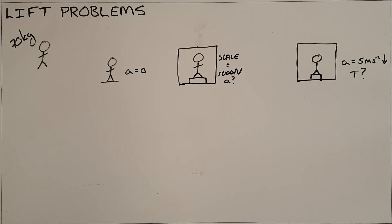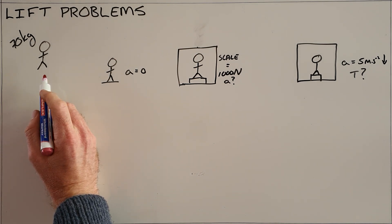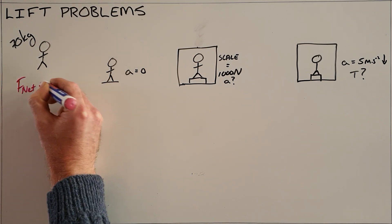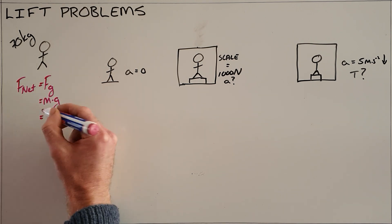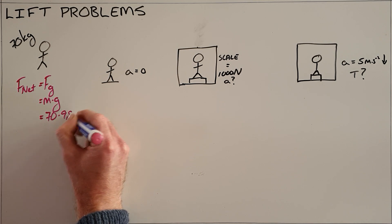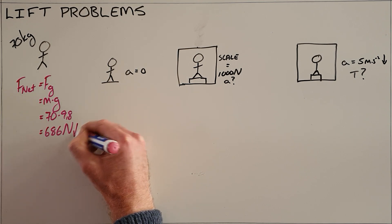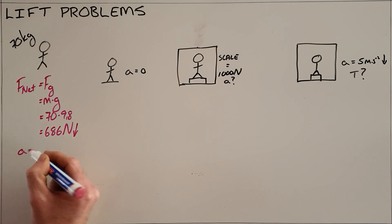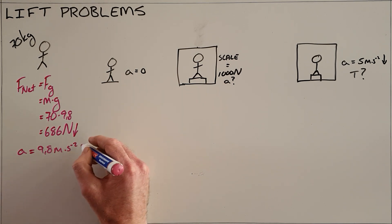Lift problems are commonly used to test a combination of Newton's first, second, and third law. We'll start with a man who is in air with a mass of 70 kilograms. The net force acting on this man is only the force of gravity, which is the product of his mass and gravitational acceleration: 70 × 9.8 = 686 Newtons downward. As a result, this man would accelerate downward at 9.8 meters per second squared.